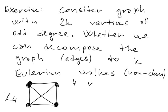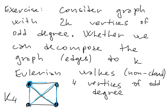We have 4 vertices of odd degree, so we can start one tour here and go like this. Then we can start another tour which goes here like this.